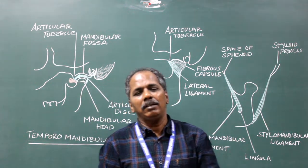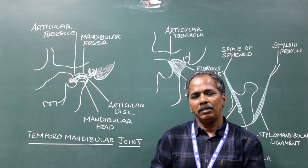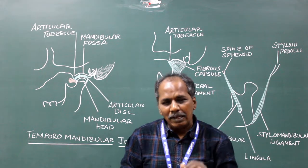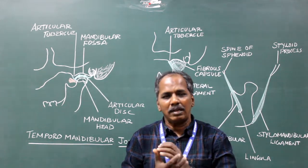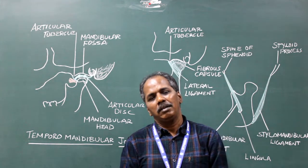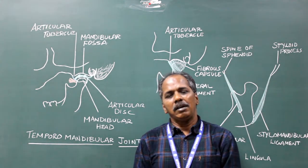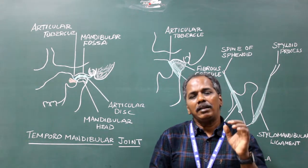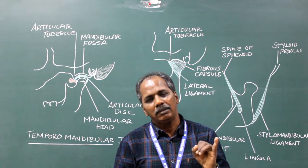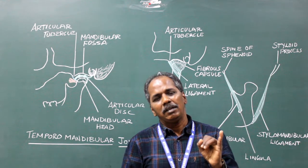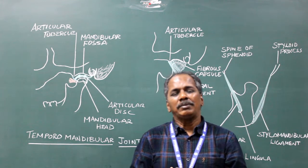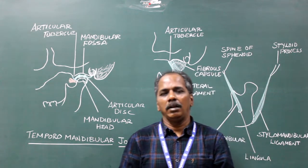Blood supply: branches from the maxillary artery and superficial temporal artery supply the temporomandibular joint. Nerve supply: articular branches from the masseteric nerve and auriculotemporal nerve supply the temporomandibular joint.